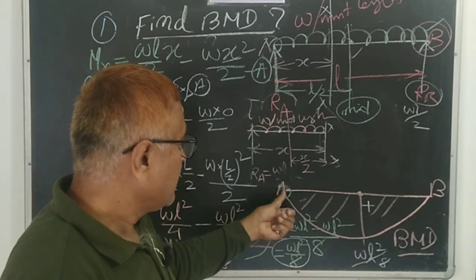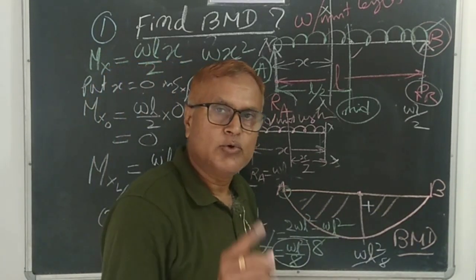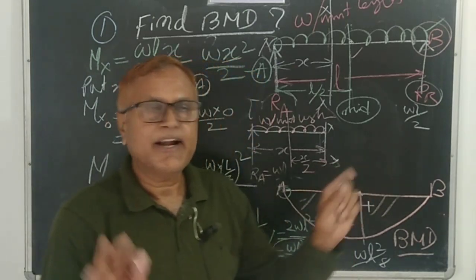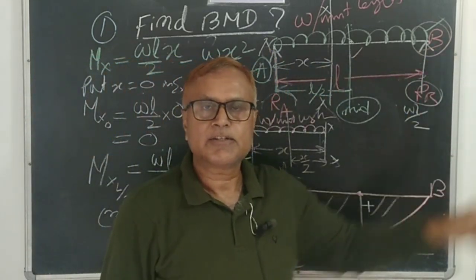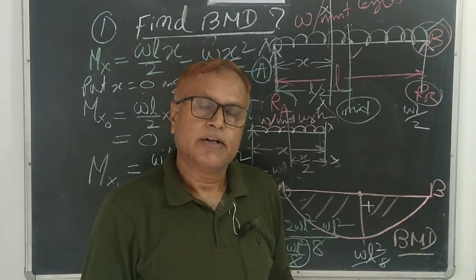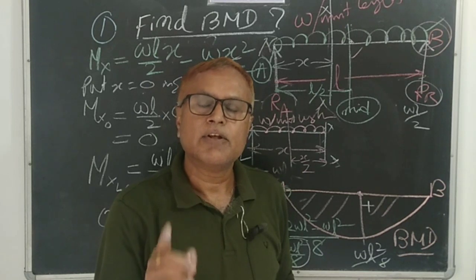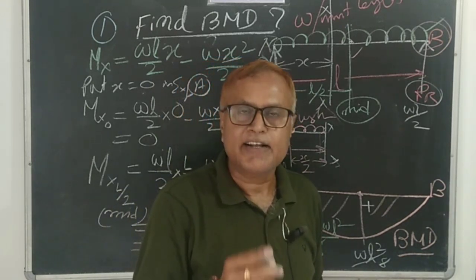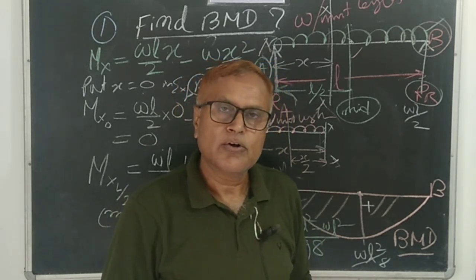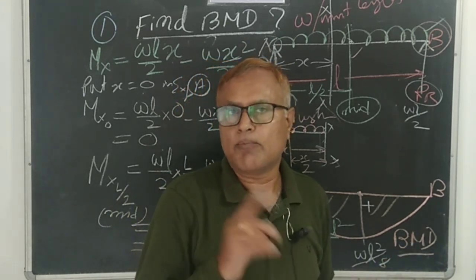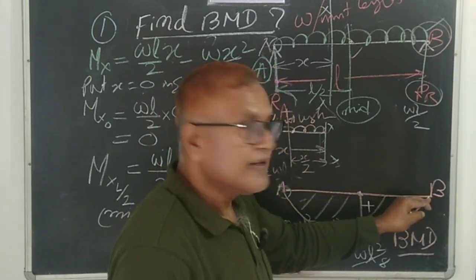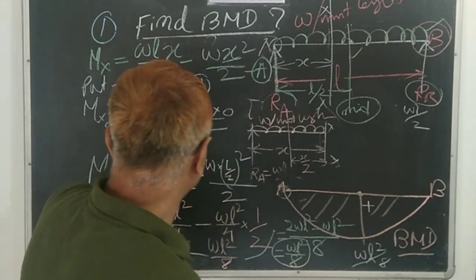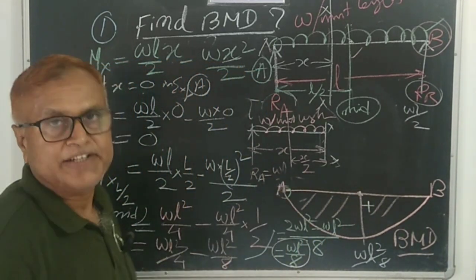Always remember: for any simply supported beam, the bending moment at both ends is zero. Why? Because the ends are free to rotate — this is the fundamental property of a simply supported beam. Since there is no resistance to rotation (no moment resistance), the bending moment is naturally zero at the supports. This has been verified both conceptually and through the formula.